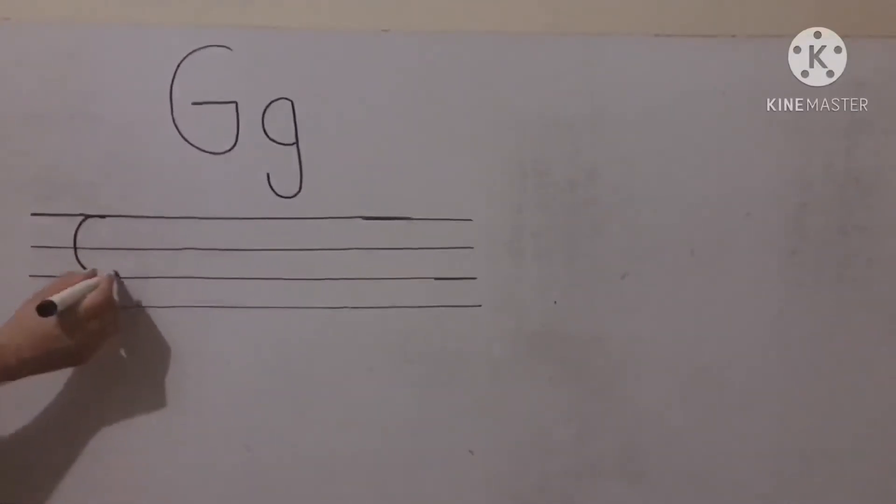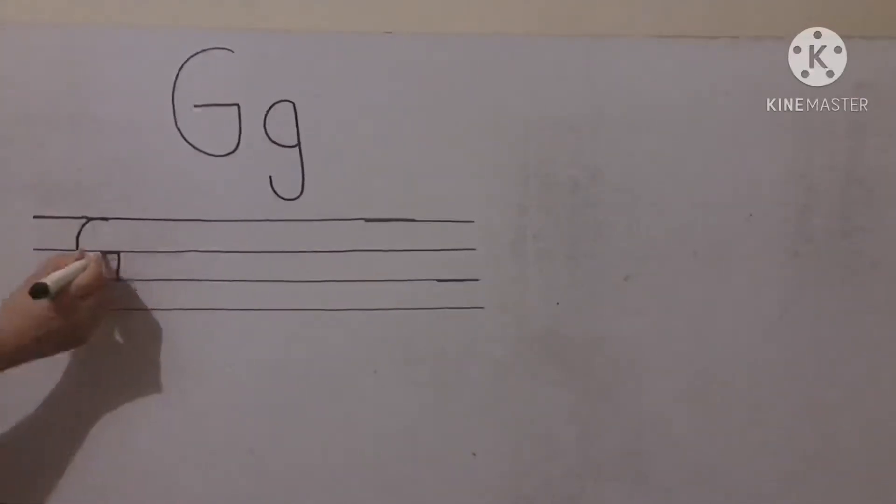So what we have to do, first we have to make a round like semicircle we have to make, and then up, and then make a sleeping line. Right.